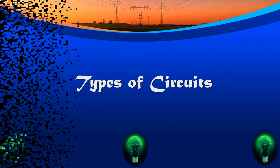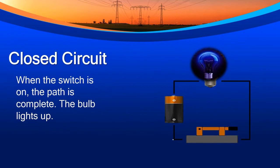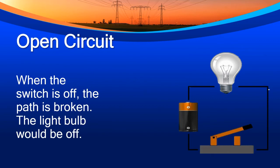Types of circuits. Closed circuit: when the switch is on, the path is complete. The bulb lights up. As you can see in the diagram, the bulb is glowing. Open circuit: when the switch is off, the path is broken. The light bulb would be off. As you can see in the diagram, the light bulb is off.